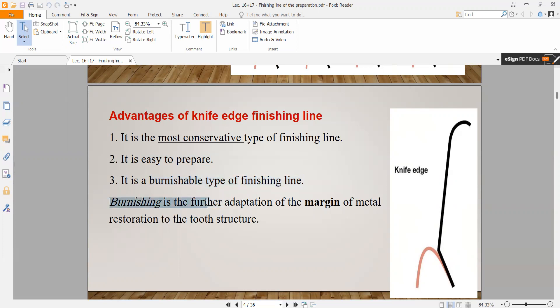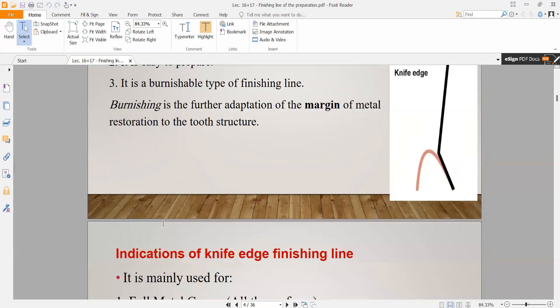Burnishing is the further adaptation of the margin of the metal restoration to the tooth structure. It means we shape the margins of our restoration to match the shape of the original tooth. This process is called burnishing.